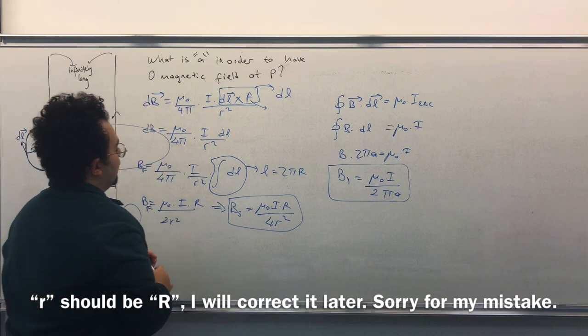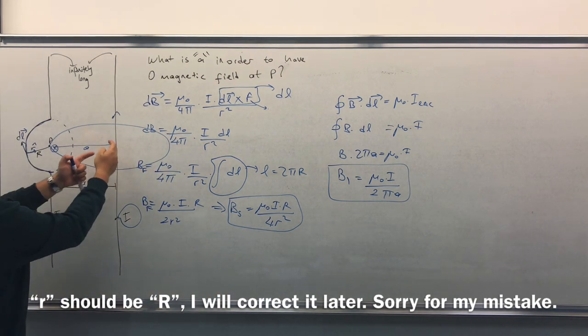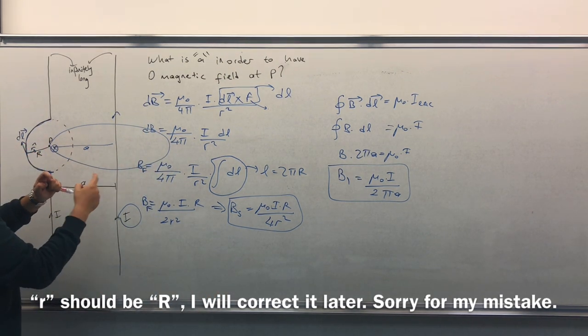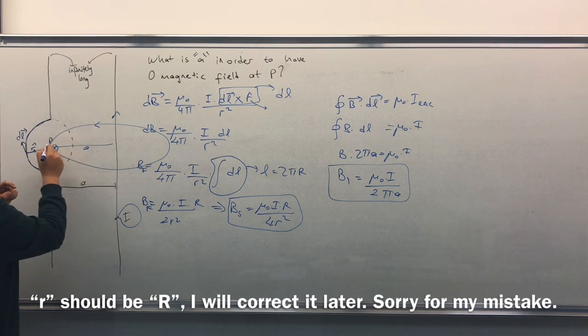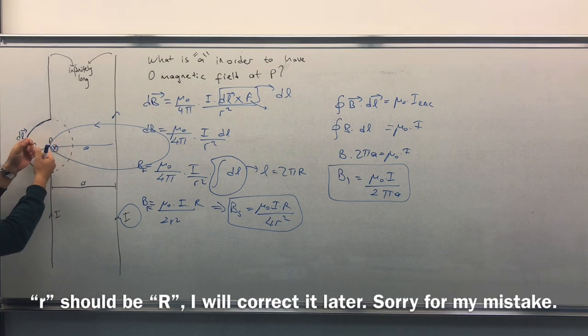Now remember, for this wire, the magnetic field vector goes in this direction. So here at point P, it goes out from the board.